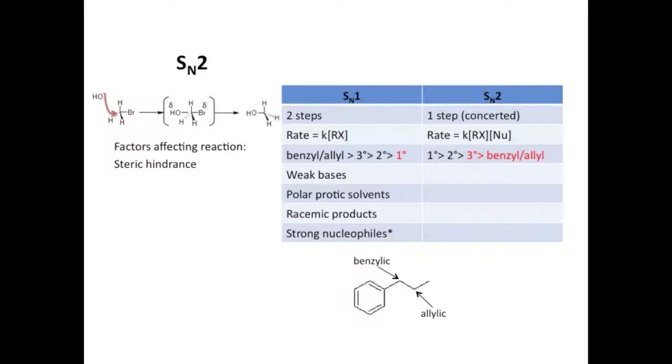This leads to SN2 having the opposite trend of SN1 when it comes to reactivity with classes of carbons, and is the number one thing you should look for when determining mechanism. Always start with determining the class of carbon when deciding between SN1 and SN2. If it's primary, it's SN2. If it's tertiary, it's SN1.